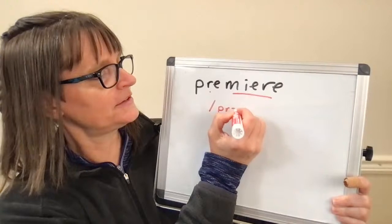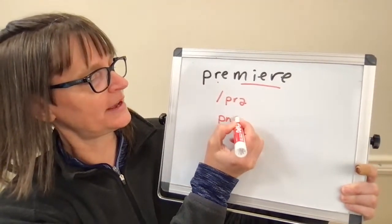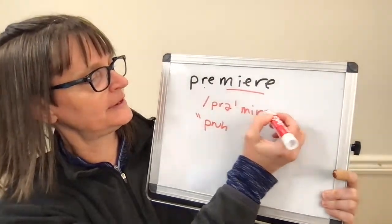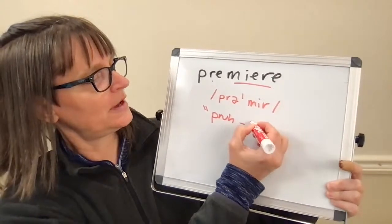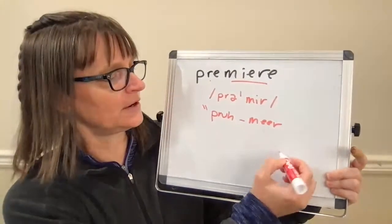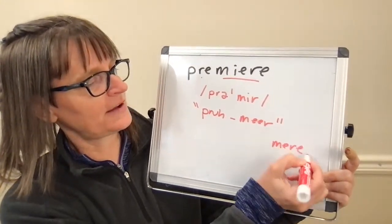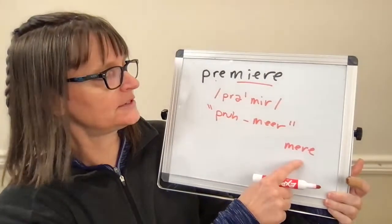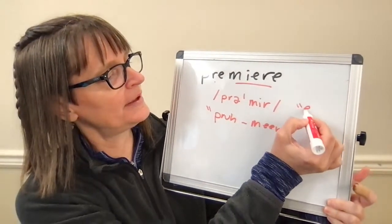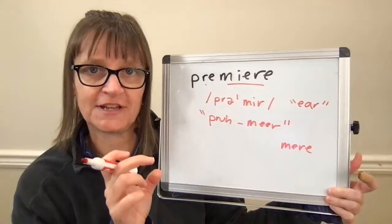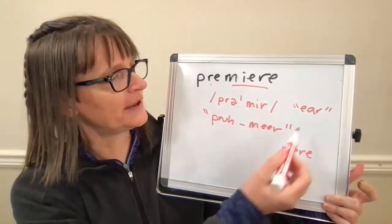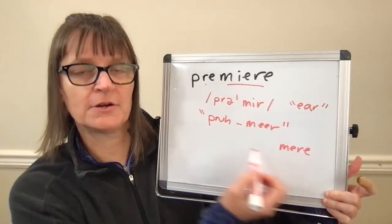In the dictionary, it'll look like this — 'pruh' with a vowel schwa, sounds like 'pruh,' and then you'll see the line for the stress, and then the 'mere' syllable is stressed. I'm going to rewrite this syllable as 'mere' — it's really the same as if I were saying 'a mere chance, a mere coincidence.' It has the ear diphthong. You have a tense E sound gliding into your American R — 'ear.' So: 'ear,' 'mere,' 'premier.'